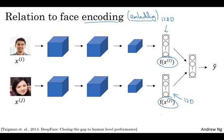So in the face recognition literature, people also use the term encoding to refer to these vectors, f(xi) and f(xj). One difference between the face recognition literature and what we do in word embeddings is that for face recognition you wanted to train a neural network that can take as input any face picture, even a picture you've never seen before and have a neural network computing an encoding for that new picture. Whereas what we'll do for learning word embeddings is that we'll have a fixed vocabulary of say 10,000 words and we'll learn a vector e1 through say e10,000 that just learns a fixed encoding or learns a fixed embedding for each of the words in our vocabulary.